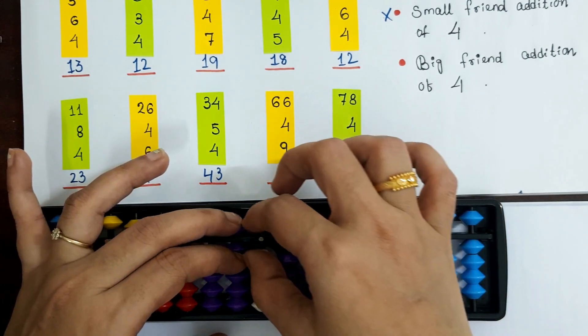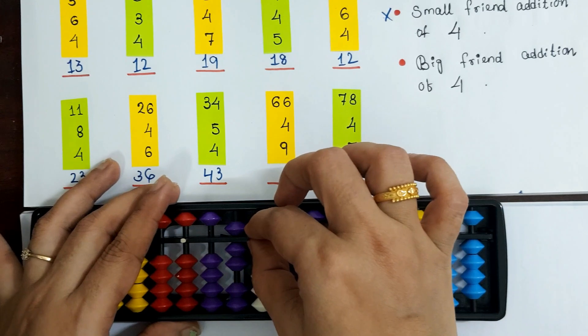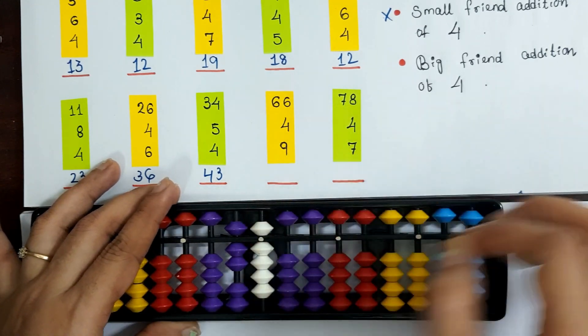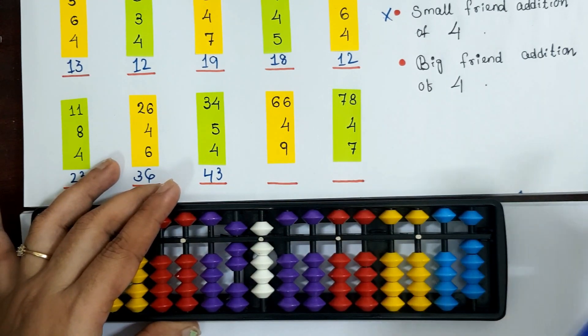Next question: 66 plus 4 plus 9. Using plus 10 minus 6, then plus 9. Answer is 79.